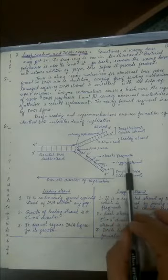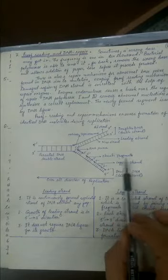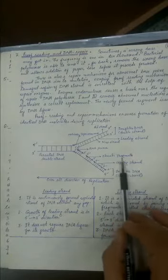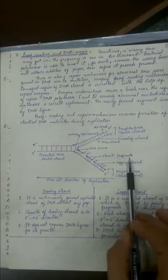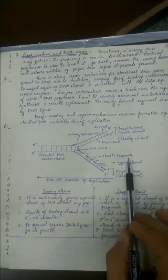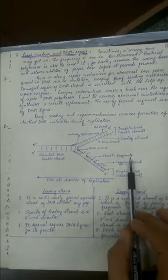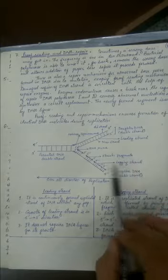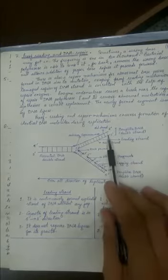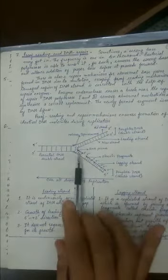These pieces are called Okazaki fragments. This name is missing in NCERT, but it has appeared in a compartment board exam paper. The strand formed continuously is called the leading strand, and the strand formed in pieces is called the lagging strand.